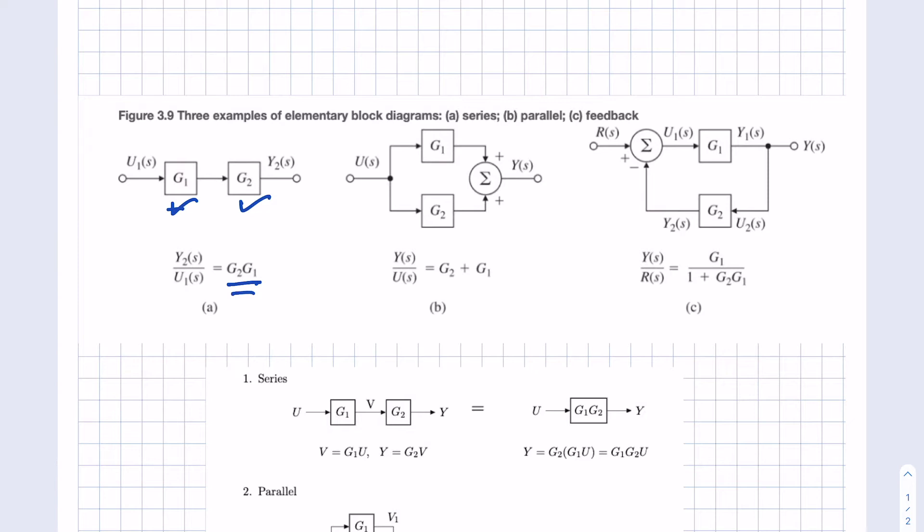Next we have the parallel case where we have two paths. Here's an input applied to both G1 and G2. You have to connect that back. When these come back together, there has to be something that joins those signals. It's joined with a summation. So that makes sense that the transfer function can reduce to G2 plus G1.